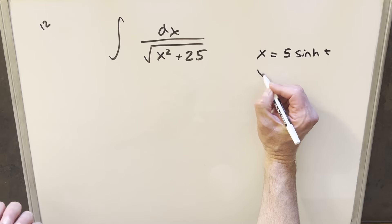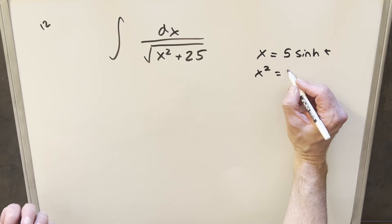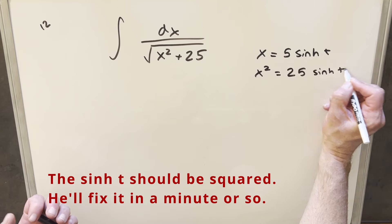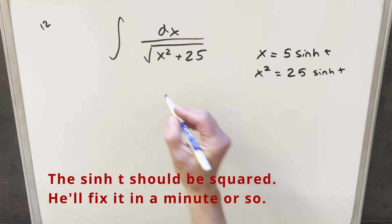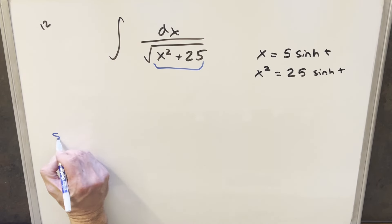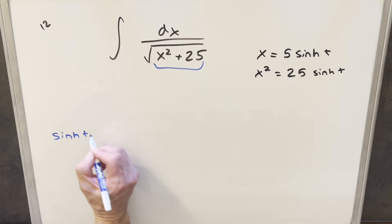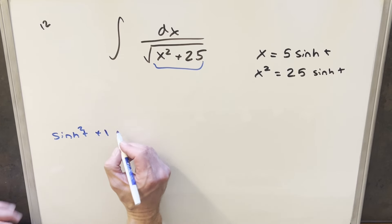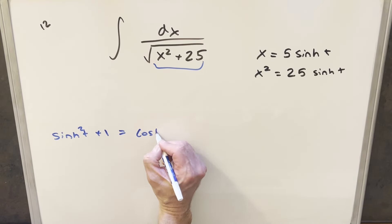And then notice if I square this, x squared is going to be 25 sinh squared t. And the reason I'm doing this for an integral in this form, we have this identity: sinh squared t plus 1, this is going to be the same thing as cosh squared t.